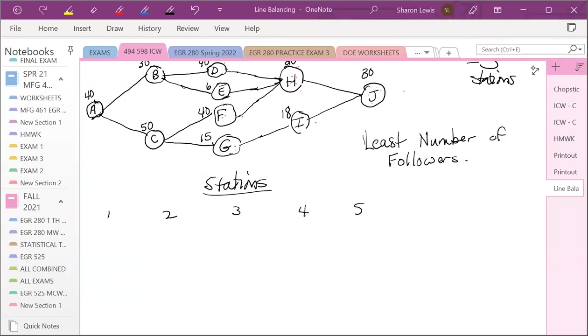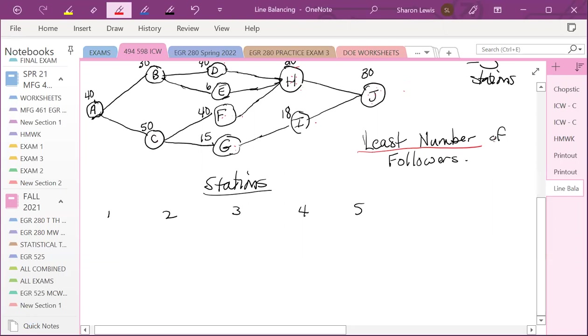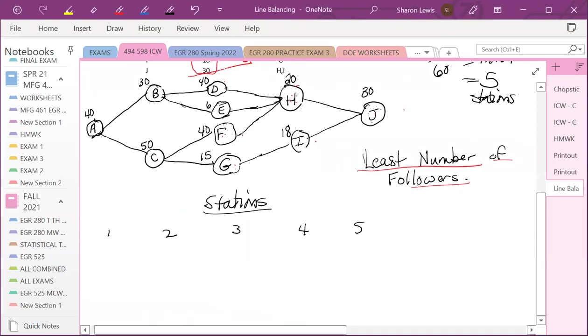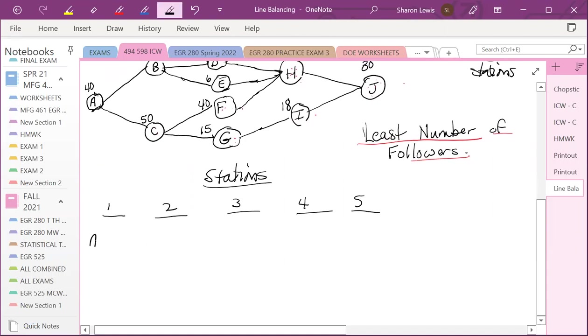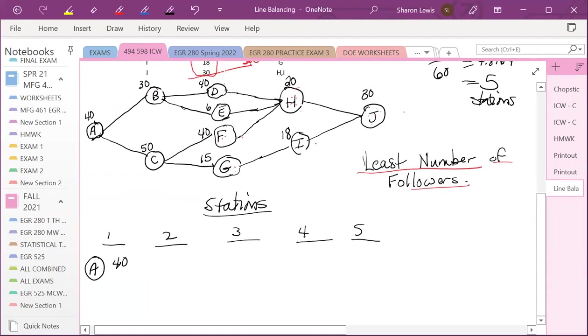Okay class, this is going to be the example of the final rule that I wanted to show you. And this one is the least number of followers. So we're going to start off with our theoretical five being our minimum number, and A has to go in because no other work can begin until A is done.